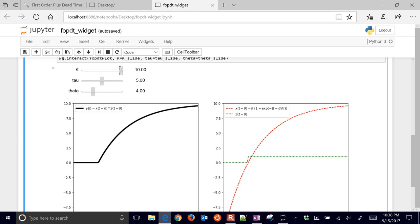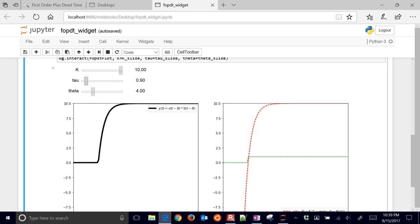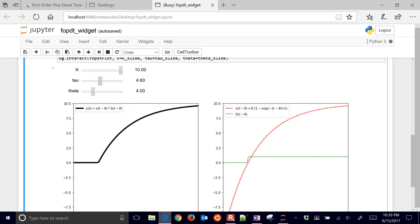Now what I want to do is show if I change the time constant tau. So if I make that longer, then it's just going to take longer to get to the new steady state. And if I make that shorter, like 0.9, then it's going to get to the new steady state very fast. Again, one time constant is 63% of the way to the new steady state. Much longer.